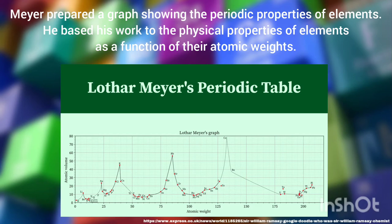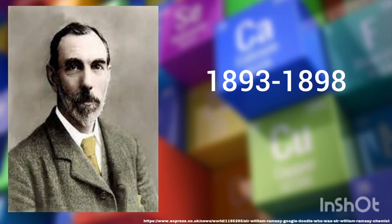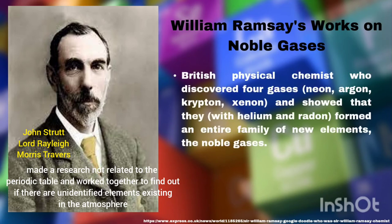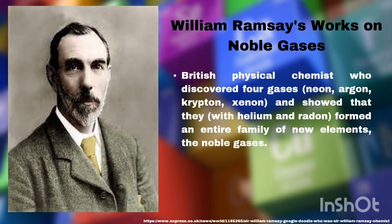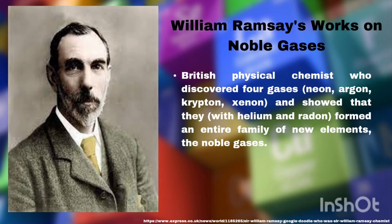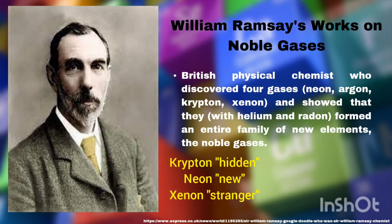Between 1893 and 1898, Sir William Ramsay, John Strutt (Lord Rayleigh), and Maurice Travers worked together to find out if there are unidentified elements existing in the atmosphere. In 1894, Ramsay and Rayleigh isolated argon from atmospheric nitrogen. Argon, the first noble gas, came from the Greek word argos meaning 'the lazy one.' In 1895, Ramsay discovered the inert gas helium, derived from the Greek word helios meaning 'sun.' Later on, Ramsay and Travers discovered more gases such as krypton (meaning 'hidden'), neon (meaning 'new'), and xenon (meaning 'stranger').